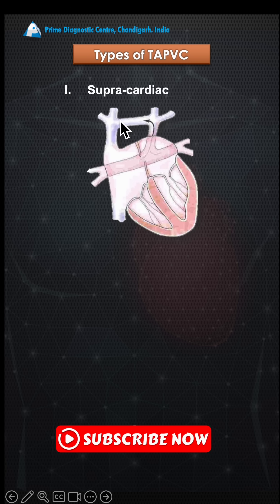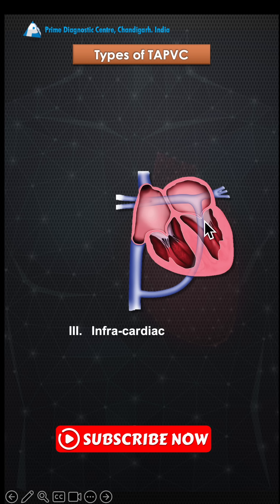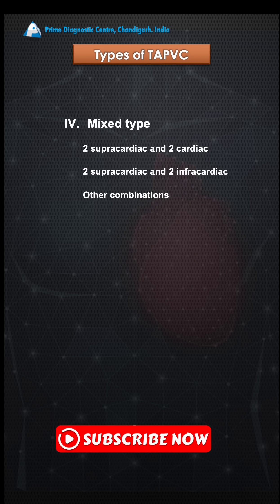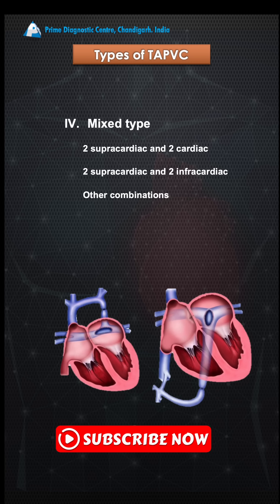The types of TAPVC are: supracardiac, where the vertical vein enters the brachiocephalic vein; cardiac, where veins enter directly into the right atrium or coronary sinus; infracardiac, where the vertical vein passes through the diaphragm into the hepatic veins or IVC; and mixed, which is a combination. In this patient, there was obstruction at the entrance of the brachiocephalic vein, as well as expected obstruction at the level of the diaphragm where it crosses the infracardiac portion. This is why the patient should be delivered in a tertiary care unit.